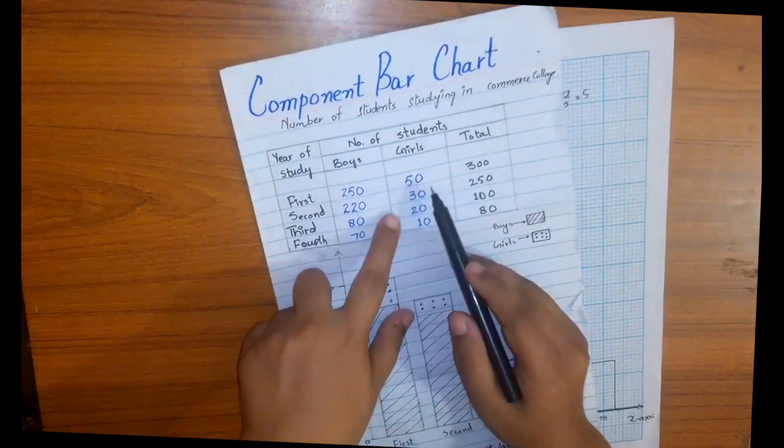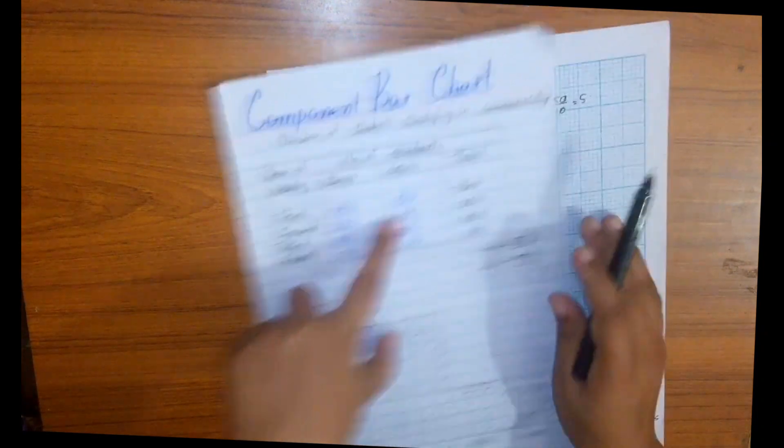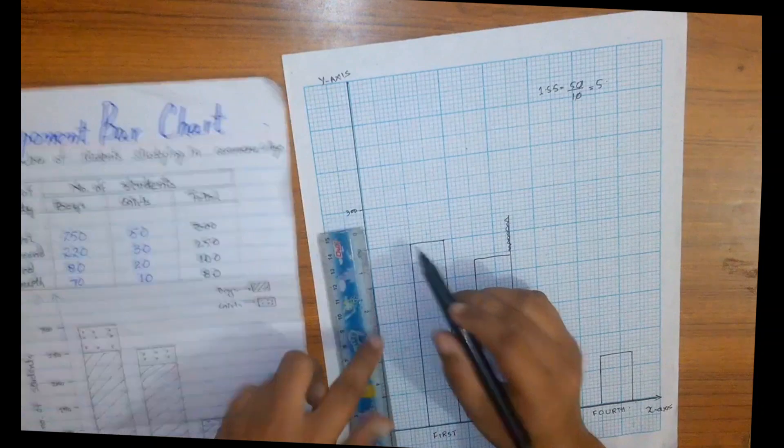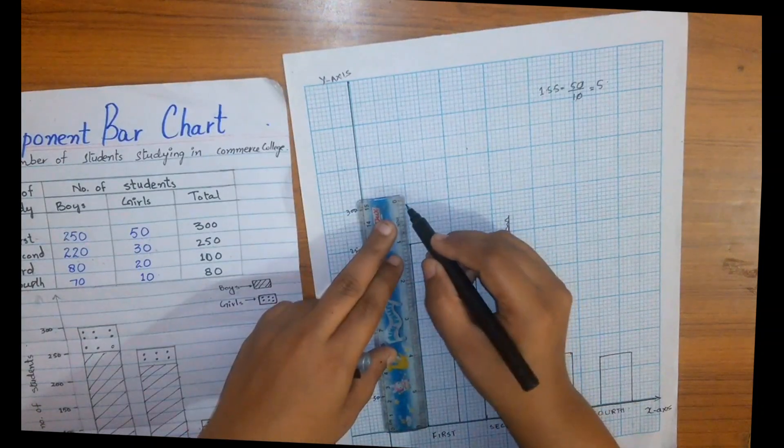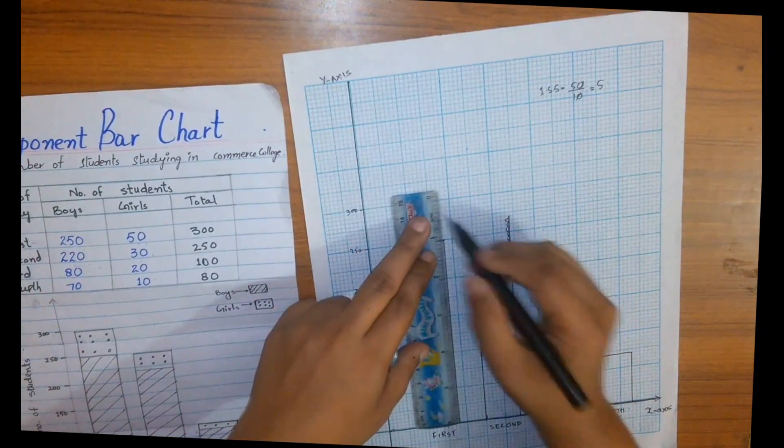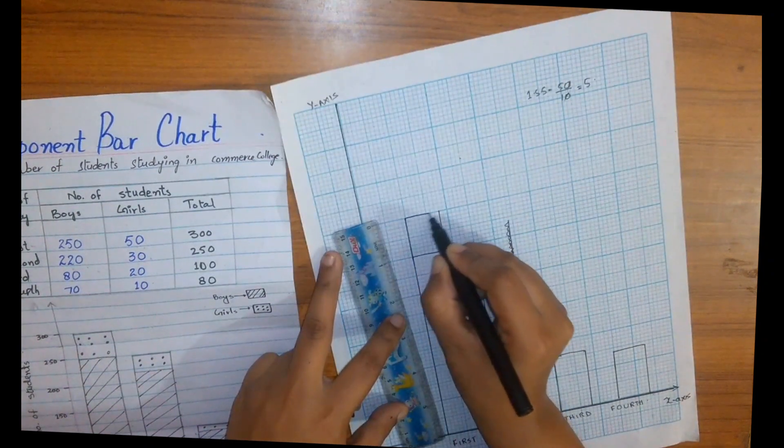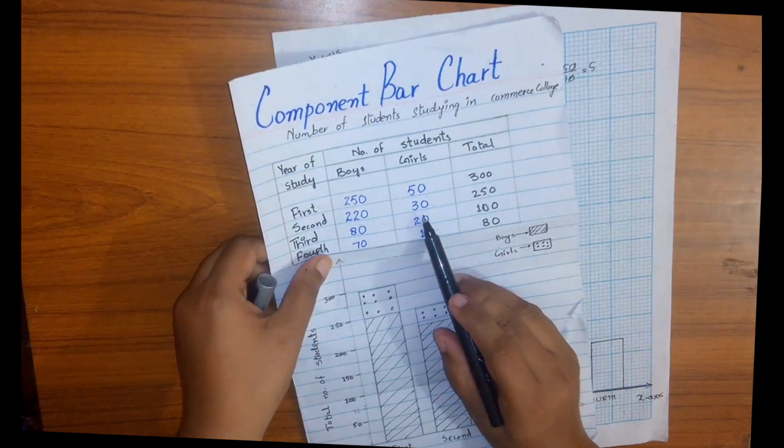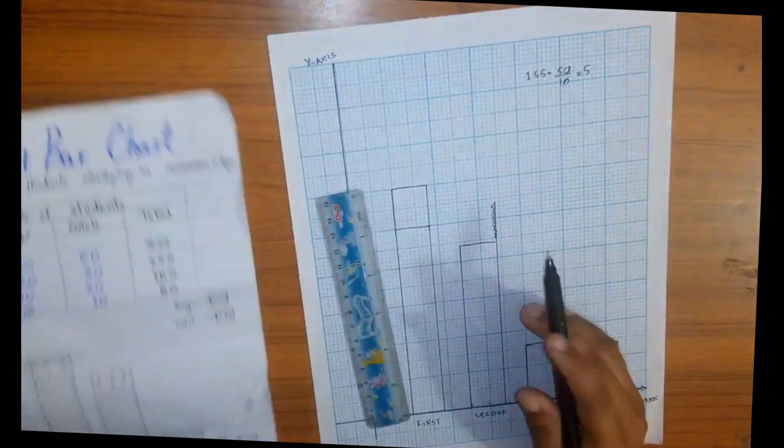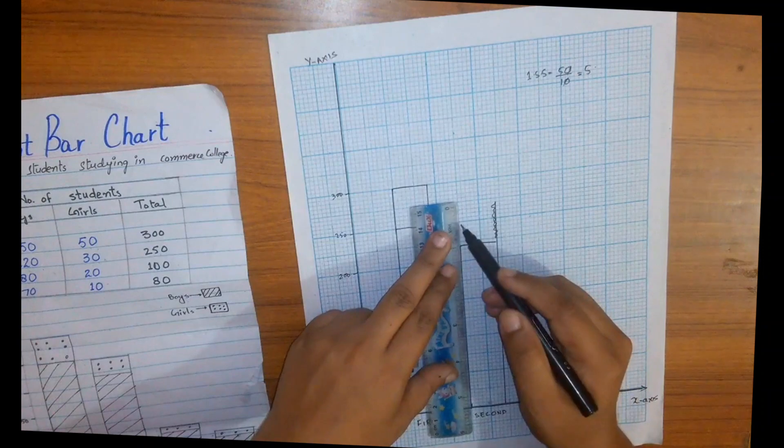In the first year we have 50 girls added to 250, which makes 300. In second year we have only 30 girls which makes a sum of 250.